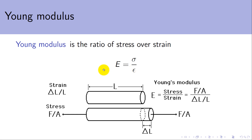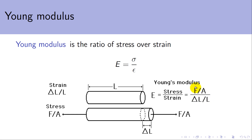So how do we combine them? E is used to represent the Young's Modulus, sigma is our stress, epsilon is our strain, and the Young's Modulus is simply the ratio of stress divided by strain. If we substitute in the values, that gives us force per area over change in length per length, which works out as force times length over area times change in length.